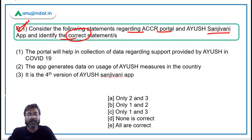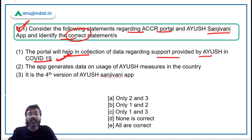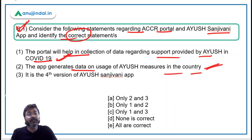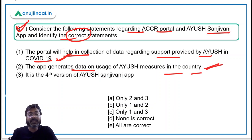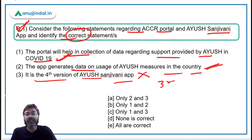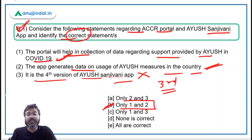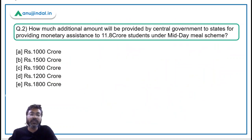Coming back to Question 1: Statement one — the portal will help in collection of data regarding support provided by Ayush in COVID-19 — is correct. Statement two — the app generates data on usage of Ayush measures in the country — is also correct. Statement three — it is the fourth version of Ayush Sanjivani app — is incorrect; it is the third version. Therefore, the correct answer is option B: only statements one and two.